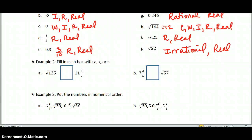Example two, fill in each box with greater than, less than, or equal to. So the square root of 125 gives me 11.18. And 11 and 7 eighths is the equivalent of 11.875, so 11 and 7 eighths is greater. The square root of 57 is 7.55, and 7 and 2 fifths is 7.4, so the square root of 57 is greater.